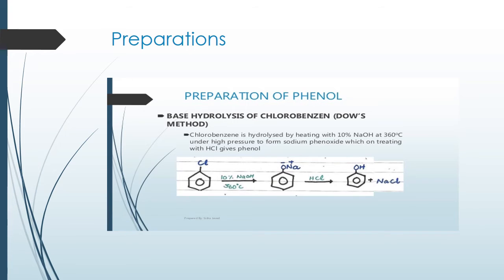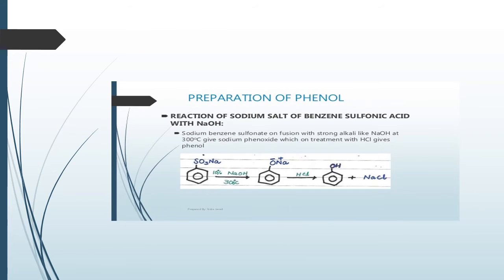Chlorobenzene is used for the preparation of phenol. When it reacts with 10% sodium hydroxide, the chlorine is replaced and sodium phenoxide is formed. Sodium phenoxide is then easily converted into phenol in the presence of acid (HCl), which also produces a salt as a byproduct.